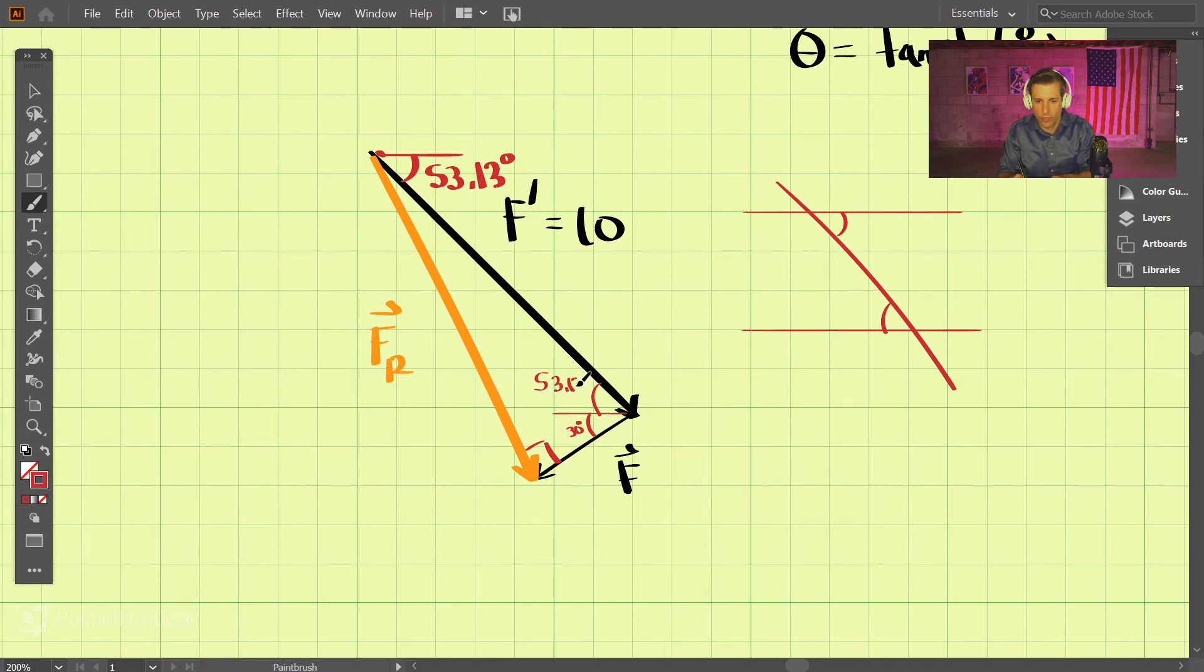So this total angle, if we talk about the total angle there, is 53.13 plus 30 degrees, which comes out to be 83.13 degrees. Okay, that's the total angle here.